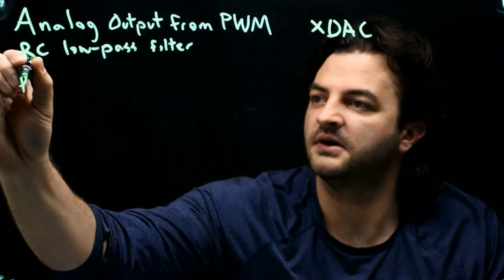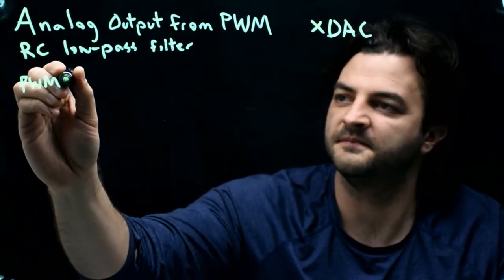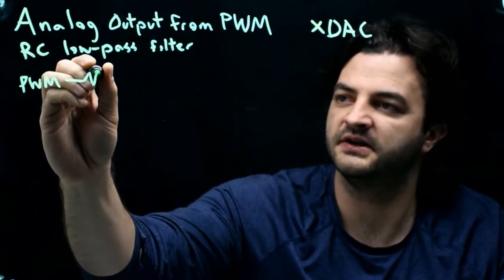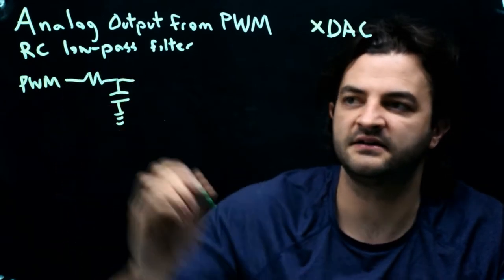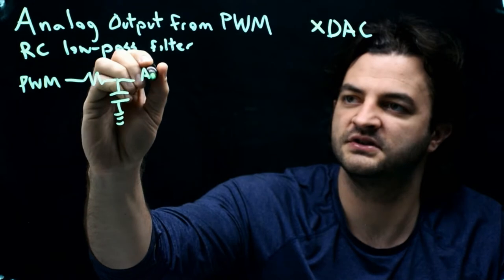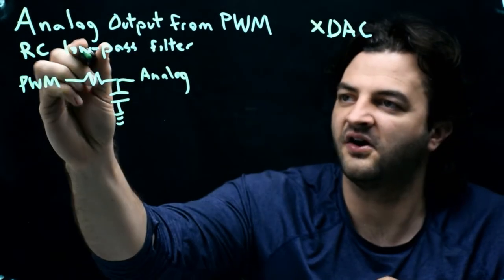So we'll take our PWM voltage. This is the digital pin from the PIC, and we'll go into a resistor that's in series with a capacitor to ground, and the output will be our analog voltage. Ideally, if we choose R and C correctly.